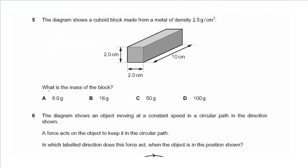Question 5 shows a cuboid block made from a metal of density 2.5 grams per centimeter cubed. What is the mass of the block? Mass equals density multiplied by volume. The density is 2.5 and the volume is 2 by 2 by 10, which gives an answer of 100 grams, so choose D.